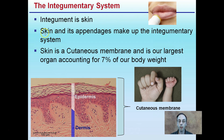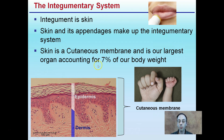We're not just talking about skin — also the appendages such as nails and hair. Skin is a cutaneous membrane and is our largest organ. Our skin alone accounts for about 7% of our body weight, so it's important to keep in mind that this is covering our entire body. For every 100 pounds, you have about 7 pounds of just skin weight.